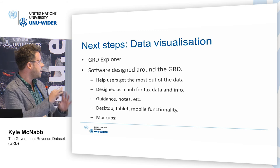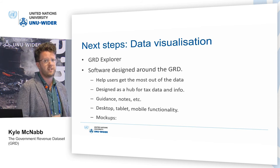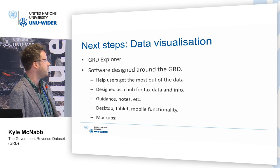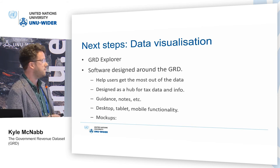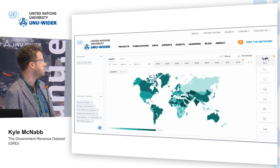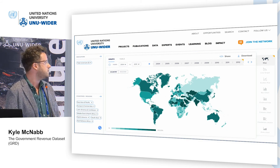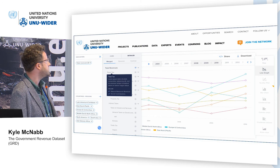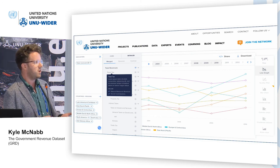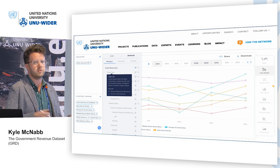We want to create a hub around tax data on the WIDER website and make the guidance and interpretation of these statistics more visible to users. We're working with a data design company in Spain to put this together. It will be a user-friendly interface where you can decide which variables you want to see, choose regions, income groups, et cetera, select your time frame, and plot the data on different kinds of visualizations. The software will be quite smart — it will see how many indicators and countries you've selected and notify you which would be the most appropriate type of visualization to use.